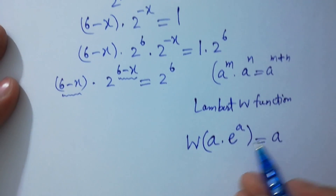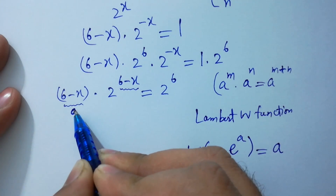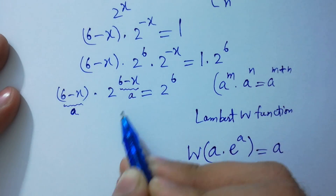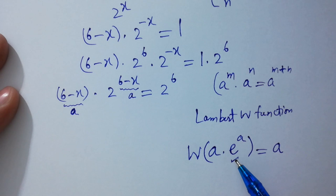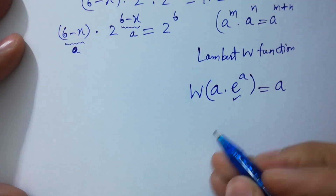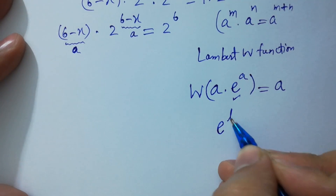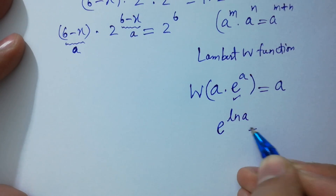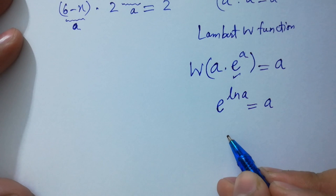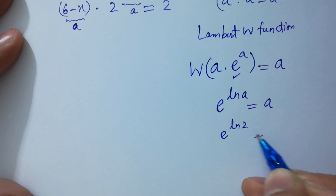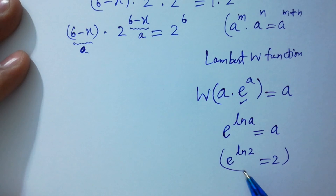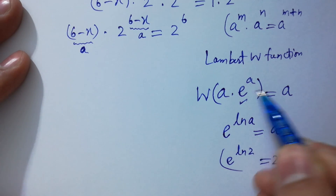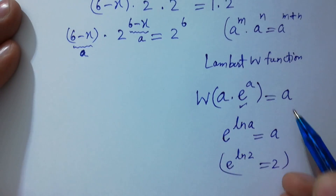Here a is 6 minus x in both positions, but we have base 2 instead of e. We need to convert this 2 into e form. Since e to the power natural log 2 equals 2, similarly e to the power natural log 2 equals 2. So I am going to convert 2 into e to the power natural log 2 to get the shape of the Lambert W function.